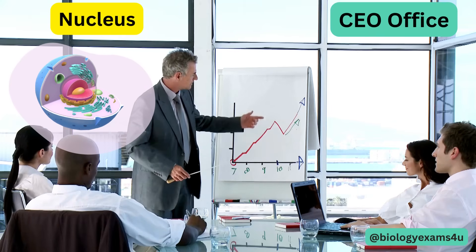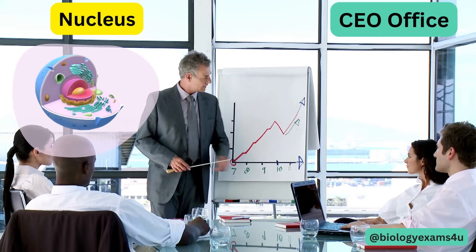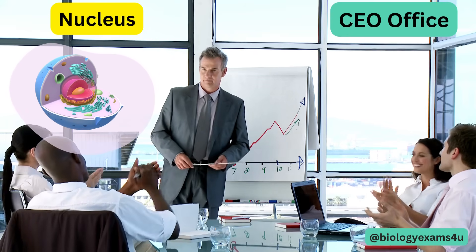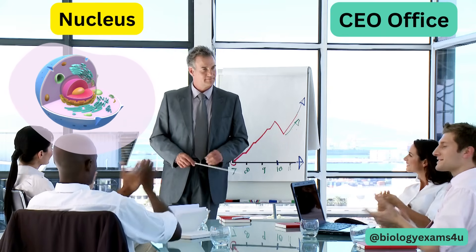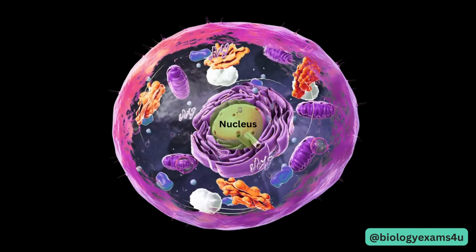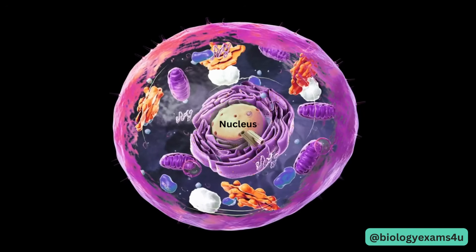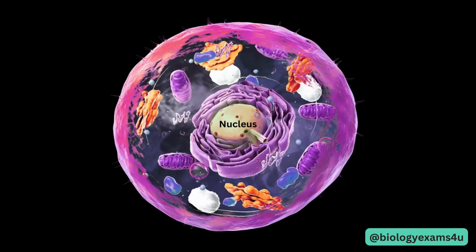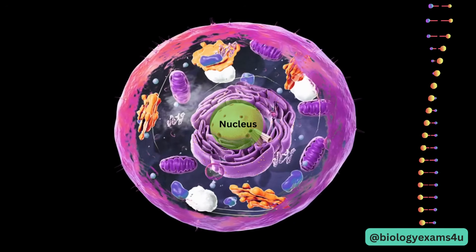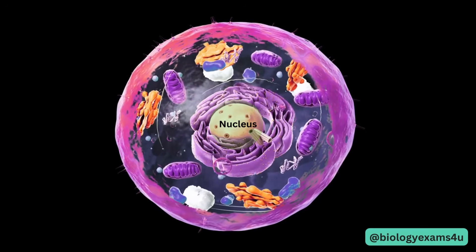Let us begin with the Nucleus. The nucleus is analogous to the headquarters or CEO's office of a factory, where the CEO along with managers will decide on products and give timely instructions for the smooth running of the factory. Inside the cell, the nucleus is the instruction center, where instructions for the synthesis of proteins are coded as DNA. It is protected by a nuclear membrane, ensuring its protection from the rest of the cell.